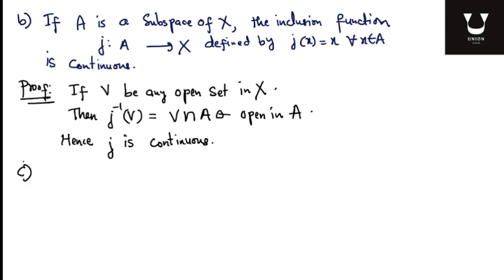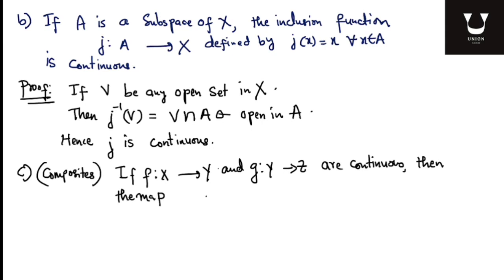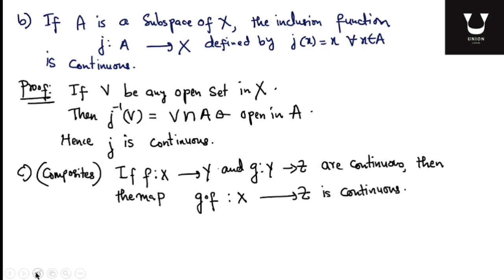The next part, part C of the theorem, talks about composites. It says that if f from X to Y and g from Y to Z are both continuous, then the composite map g ∘ f, which is a map from X to Z, is also continuous.